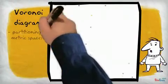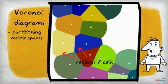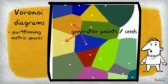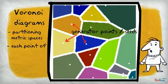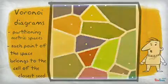Voronoi diagrams are a common way of partitioning metric spaces into regions or cells around a given set of points called seeds or generator points, such that each point of the space belongs to the cell of the closest seed.